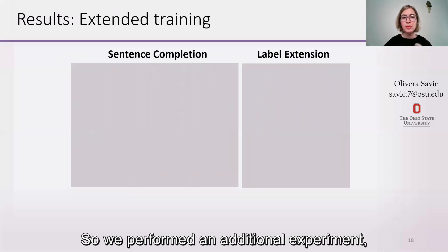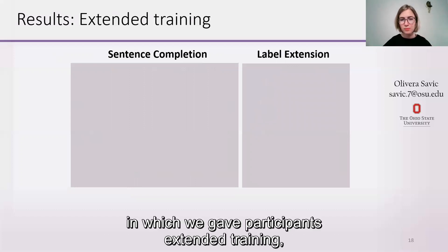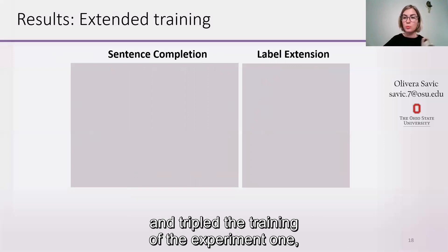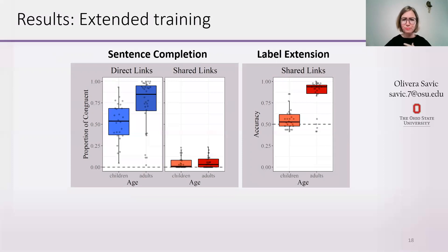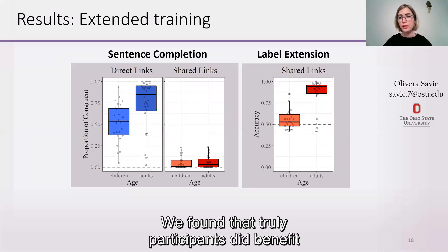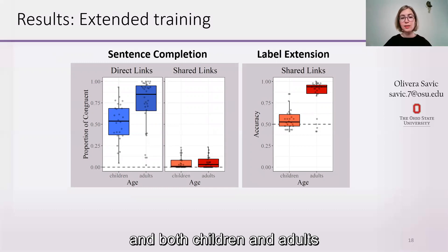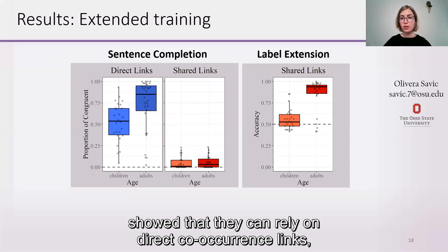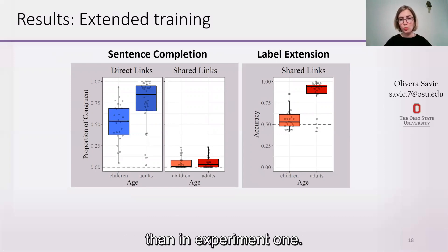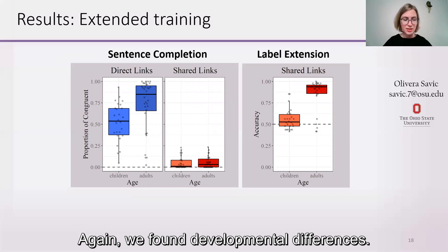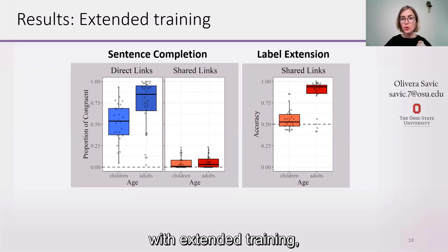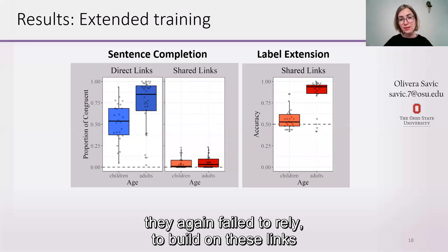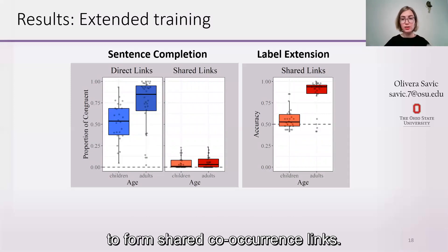So we performed an additional experiment in which we gave participants extended training, tripling the training from experiment one, and measured their performance in the same tasks — sentence completion and label extension. We found that participants did benefit from extended training, and both children and adults showed they can rely on direct co-occurrence links, which were much stronger than in experiment one, with developmental differences again observed. However, importantly, although children in experiment two with extended training showed the same strength of direct co-occurrence links as adults in experiment one, they again failed to build on these links to form shared co-occurrence links.